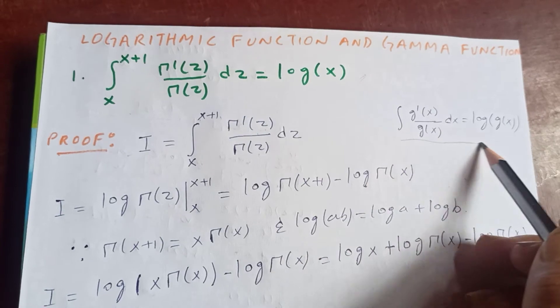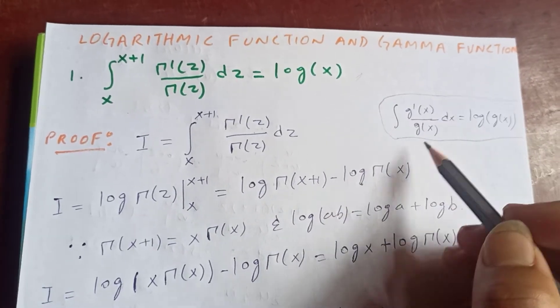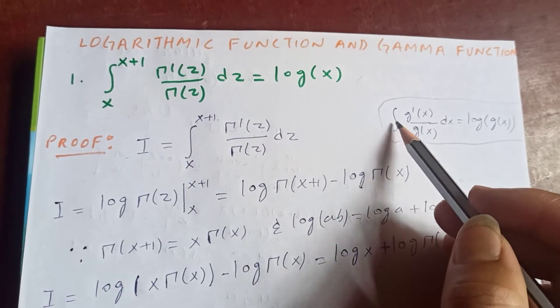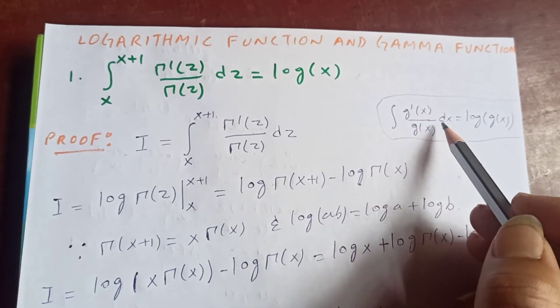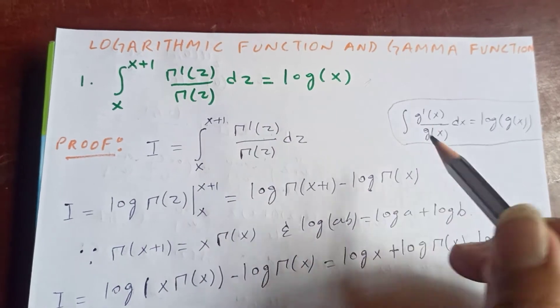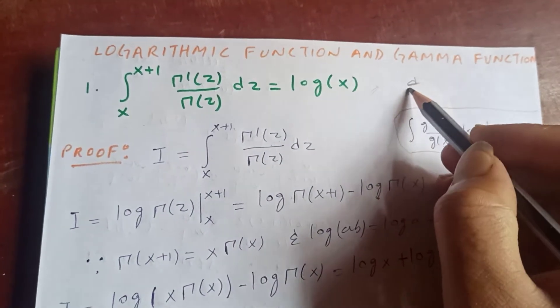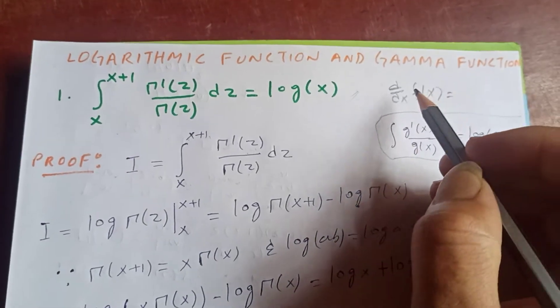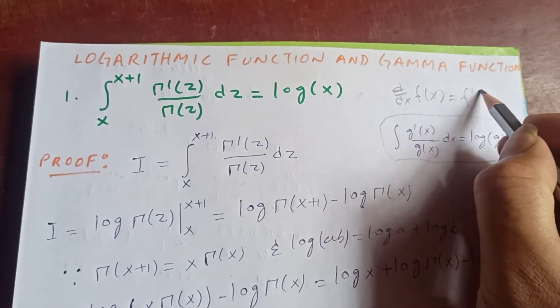Now we know that from property of gamma integration, integral of f prime of x upon f of x dx, where this prime is differentiation. This d by dx of f of x will be represented by f prime of x.